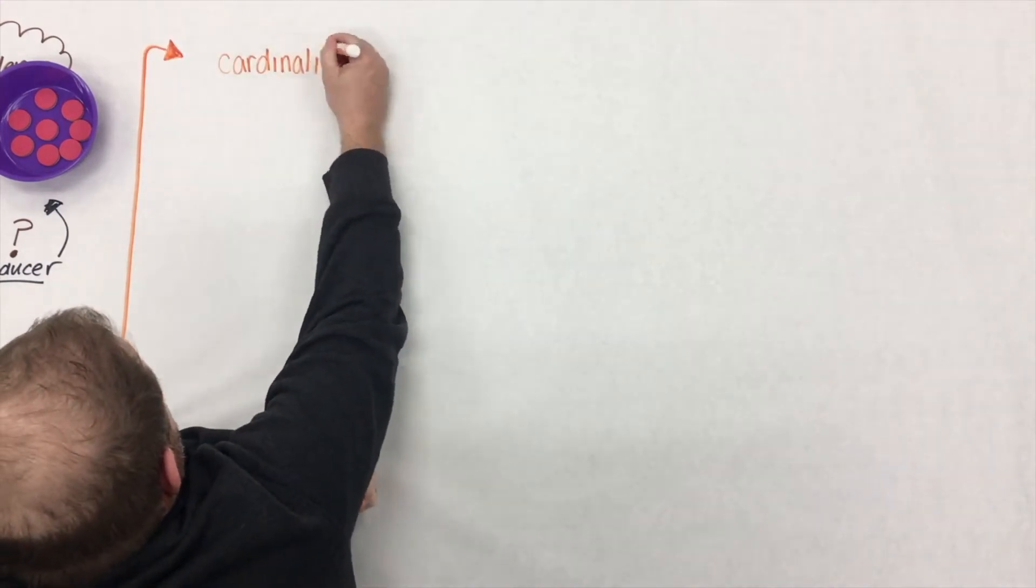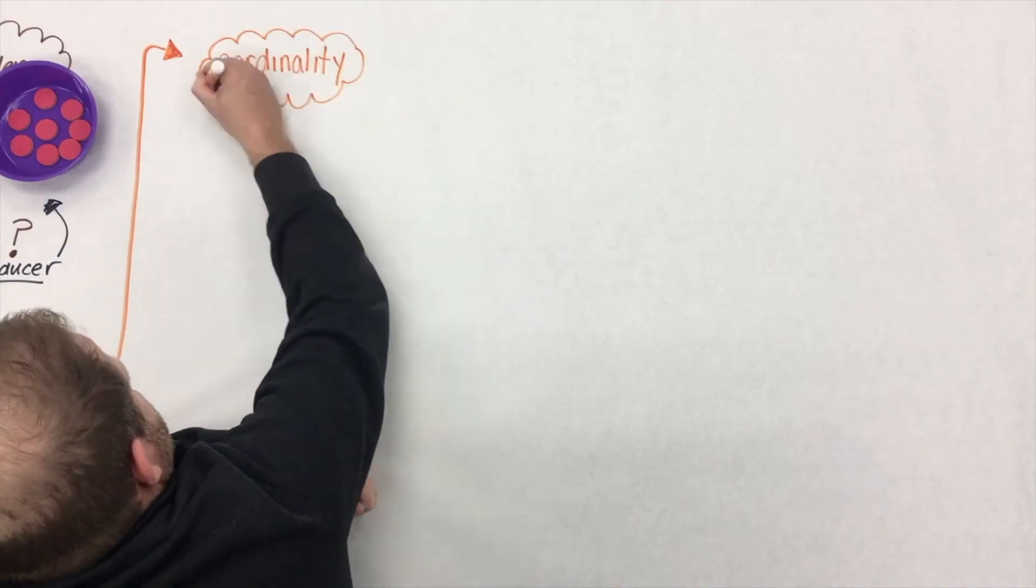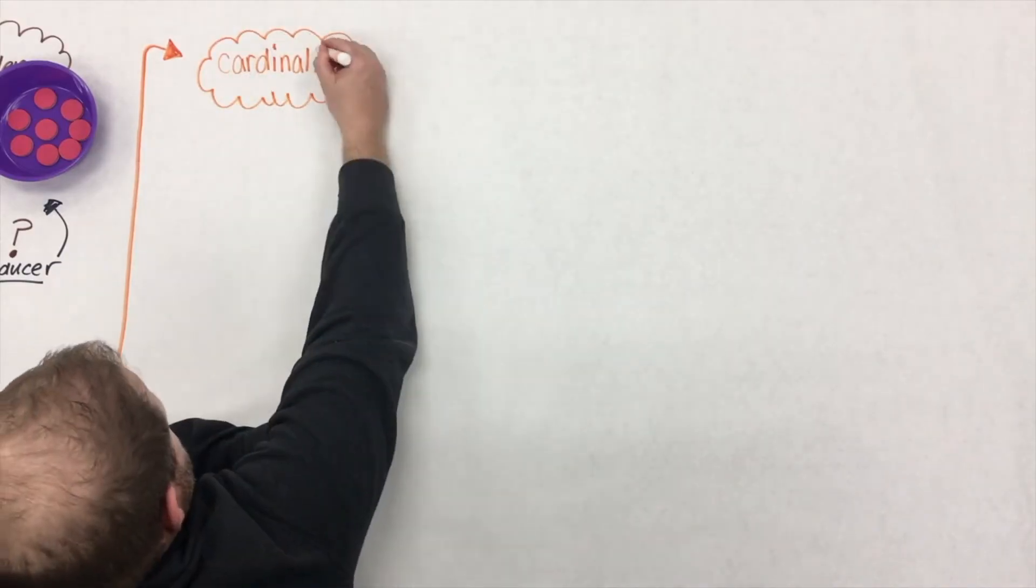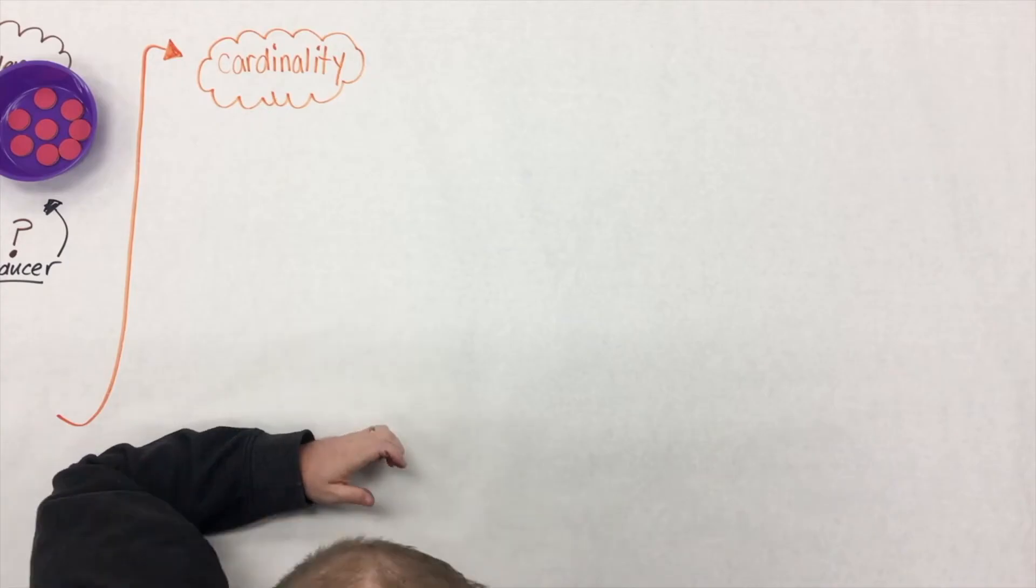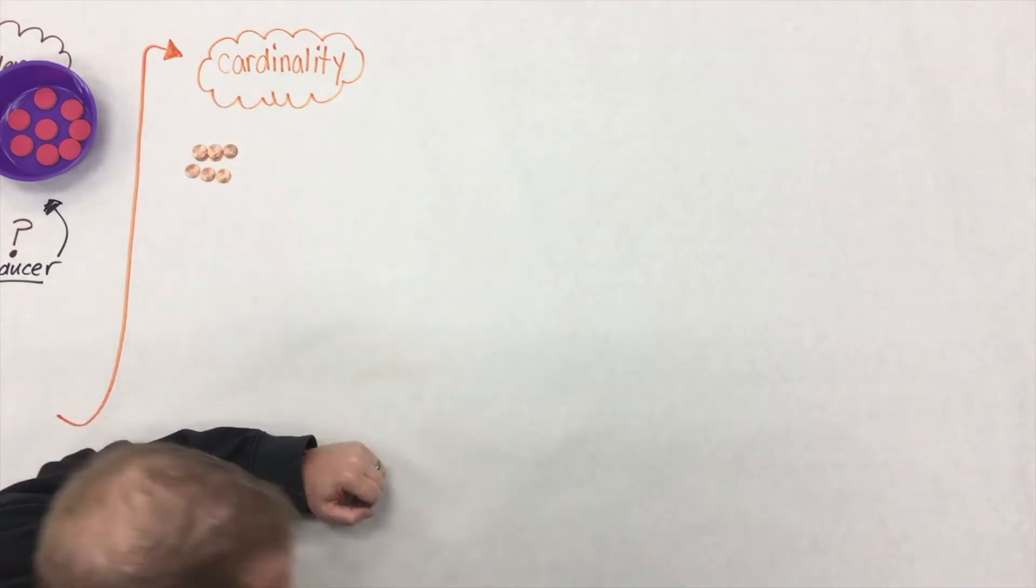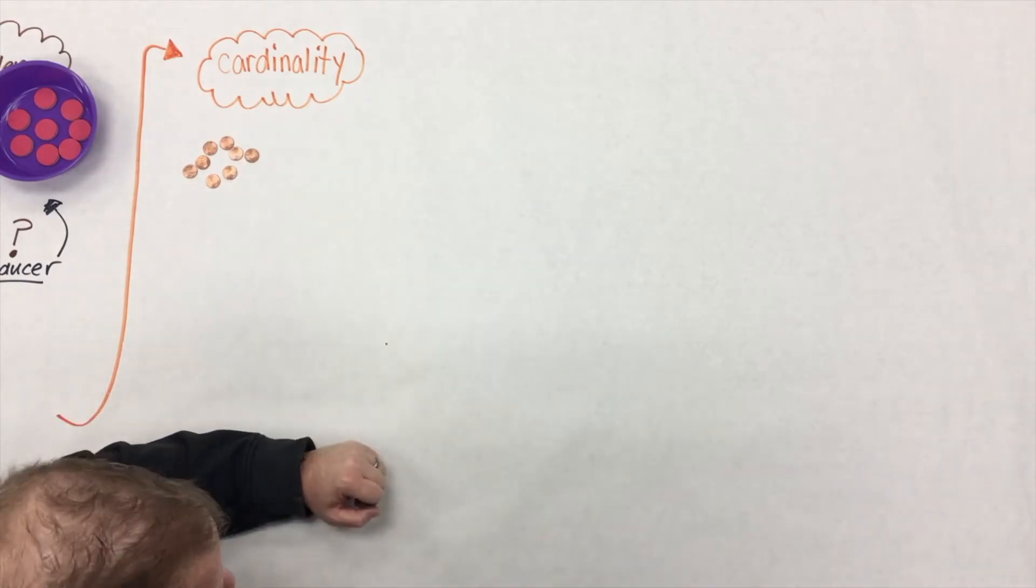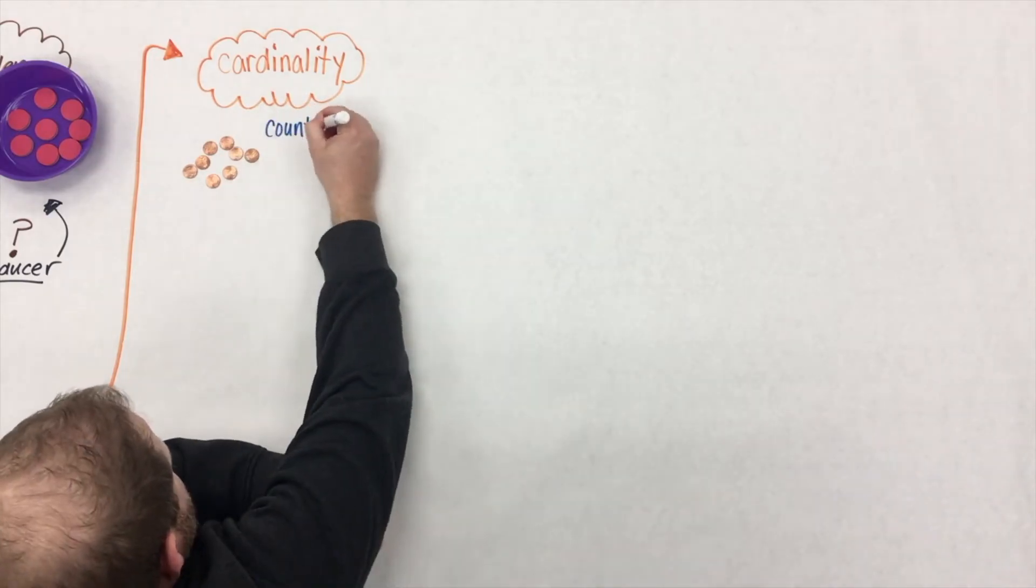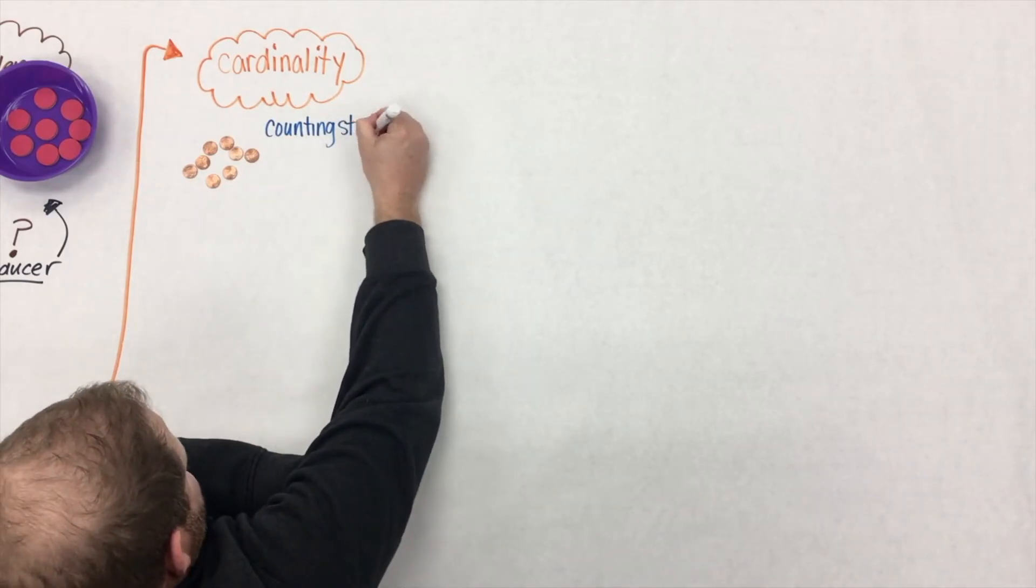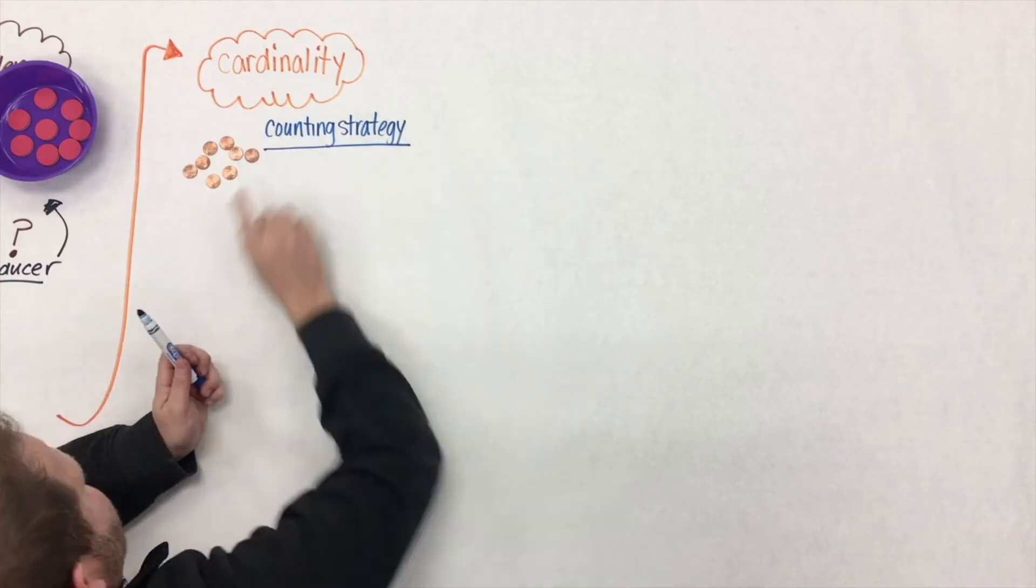So as students are working on rote counting and one-to-one correspondence, cardinality gradually makes its way into the conversation. What cardinality is, is when students are counting out a set of objects, the last number in that count sequence describes the quantity in the set. Students might count this pattern here of these pennies, but they might double count some.